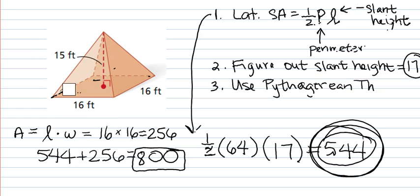I knew the formula for lateral surface area is one half the perimeter of the base times the slant height.